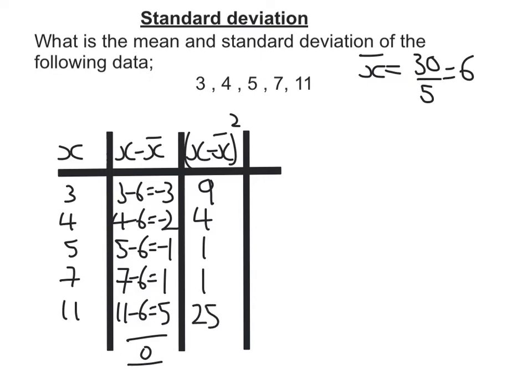Now, what we did this for is to work out something called the sum — that's the symbol for the sum of x minus x̄, all squared. So now I'm going to add up that last column: 9 plus 4 plus 1 plus 1 plus 25 is 40. So this value is 40.